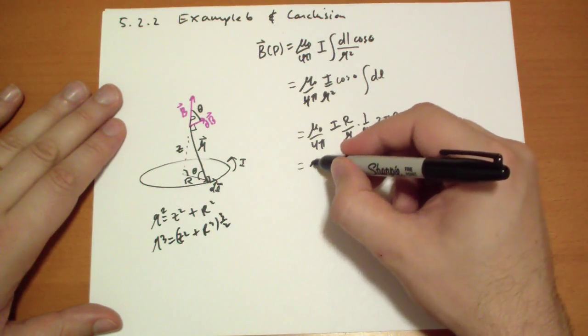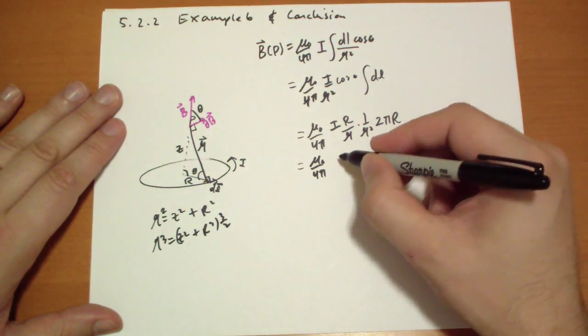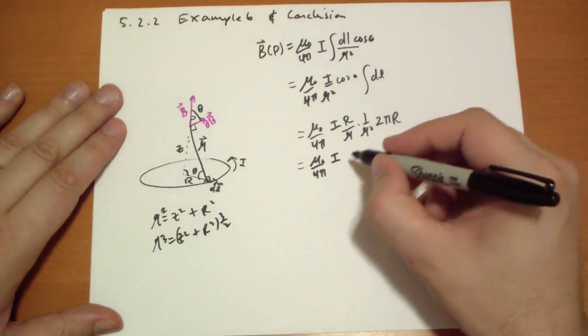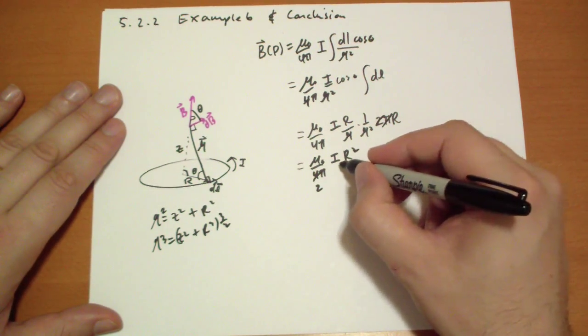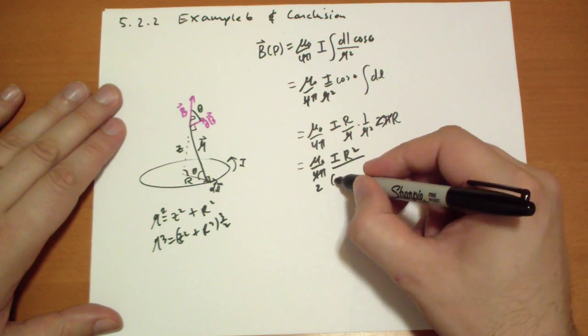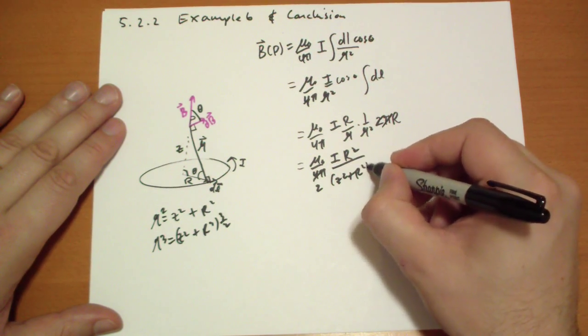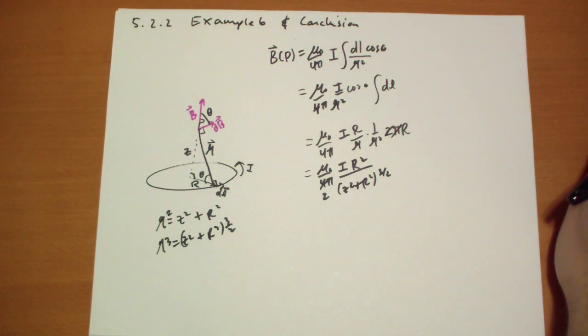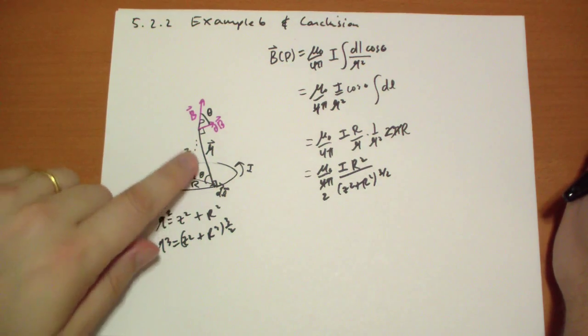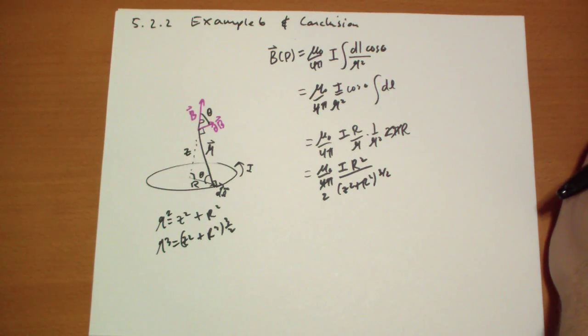All of that to the 3 halves. And so we get mu naught over 4 pi, I R squared. I forgot to cross off these guys. So we have 2 on the bottom there. Over Z squared plus R squared to the 3 halves. And that's the answer for the magnetic field pointing up a distance away from this current.